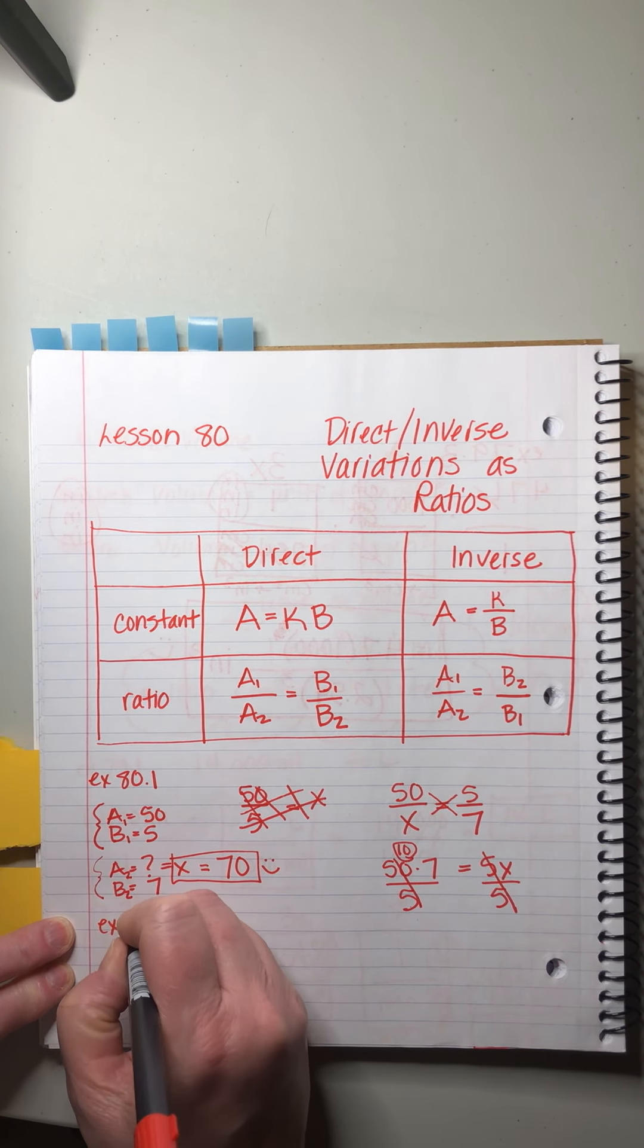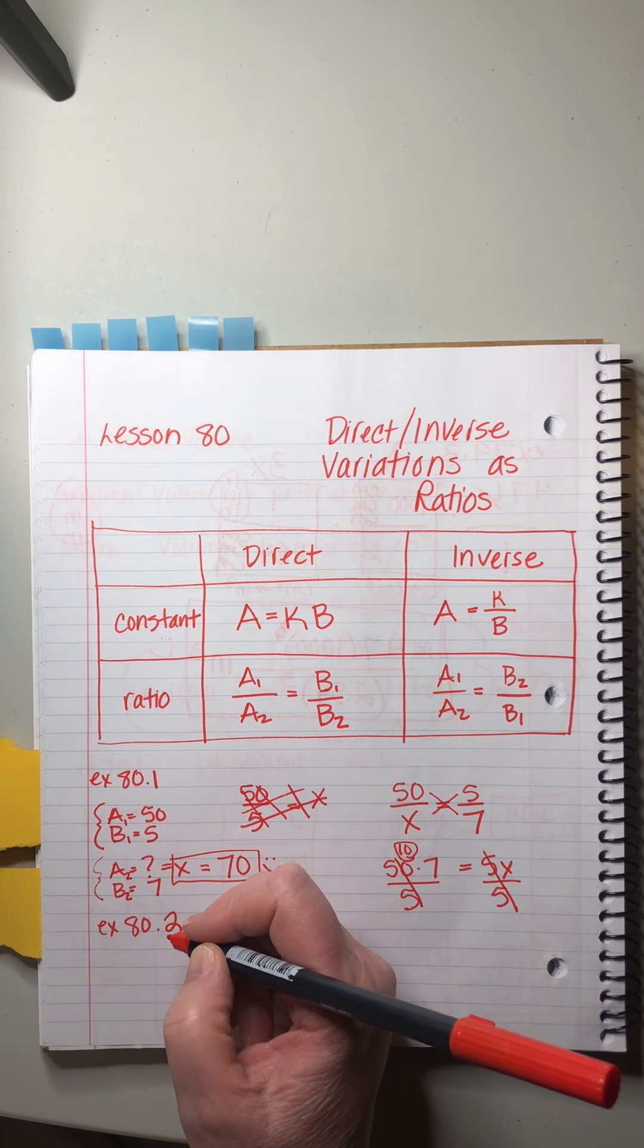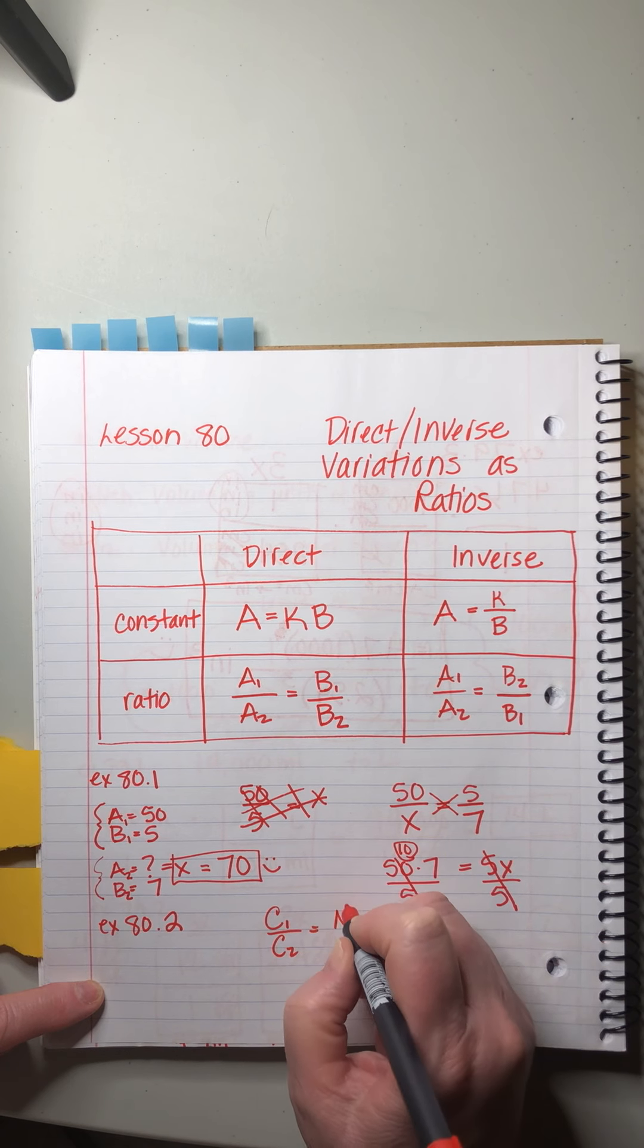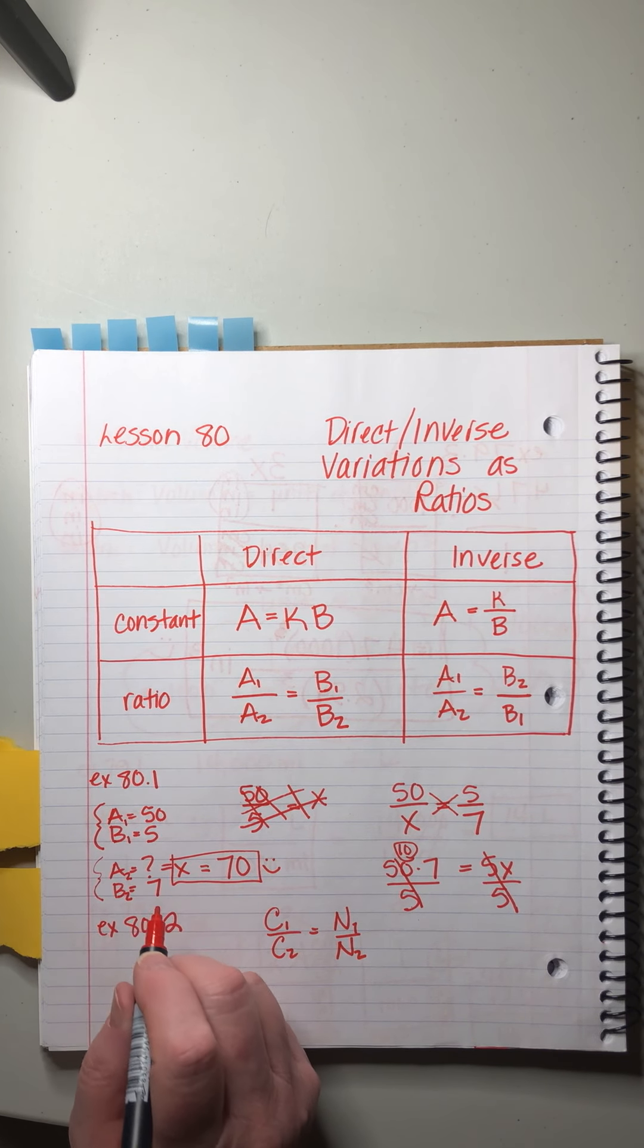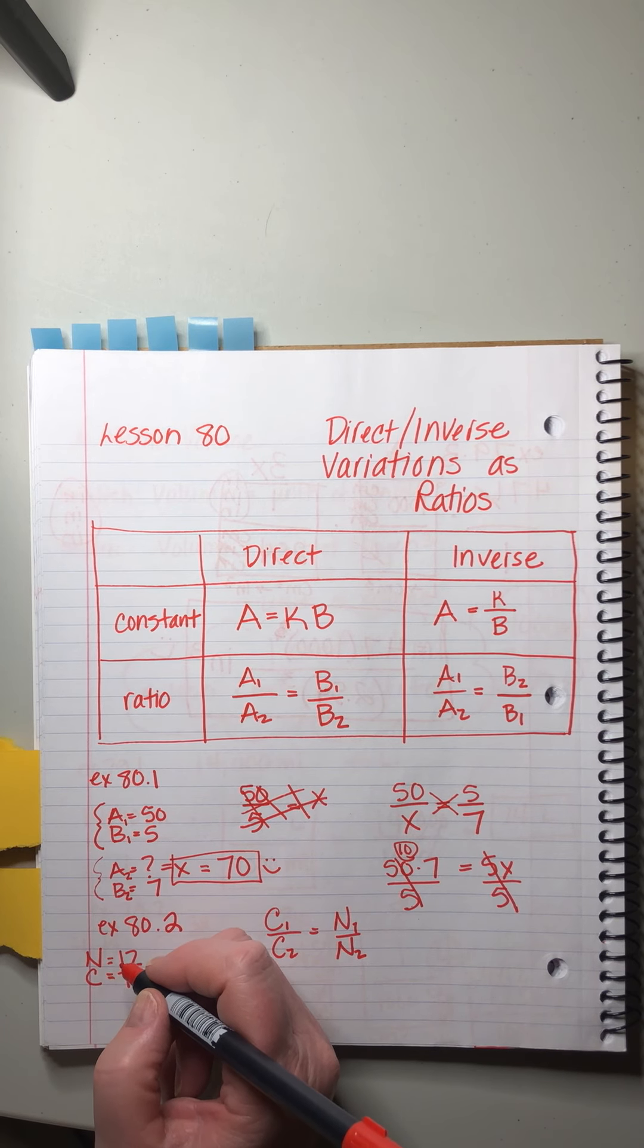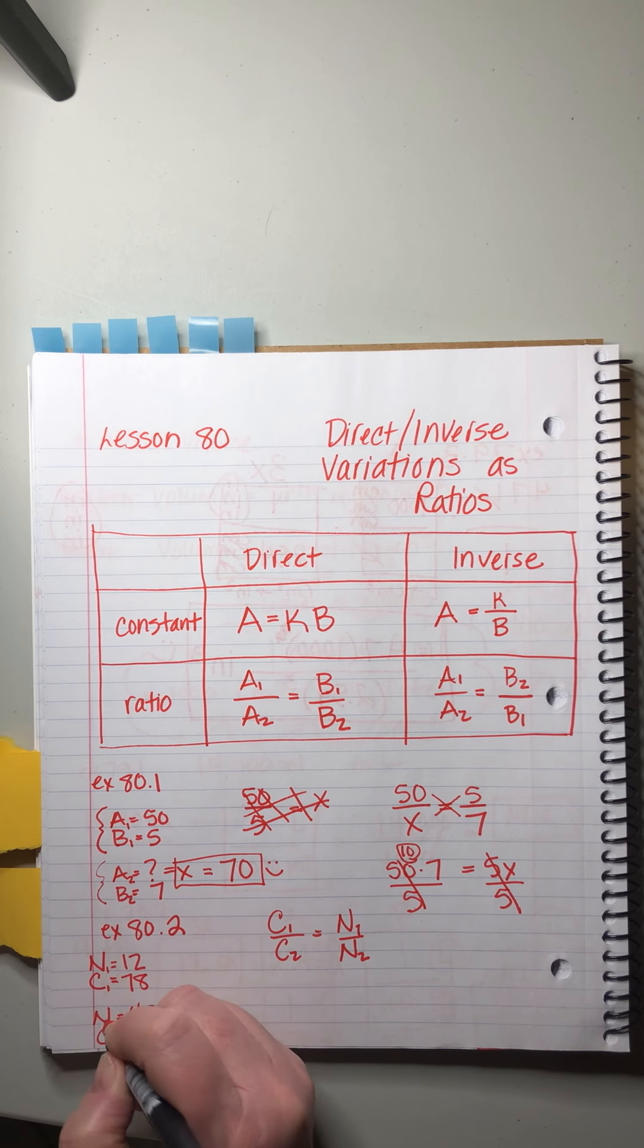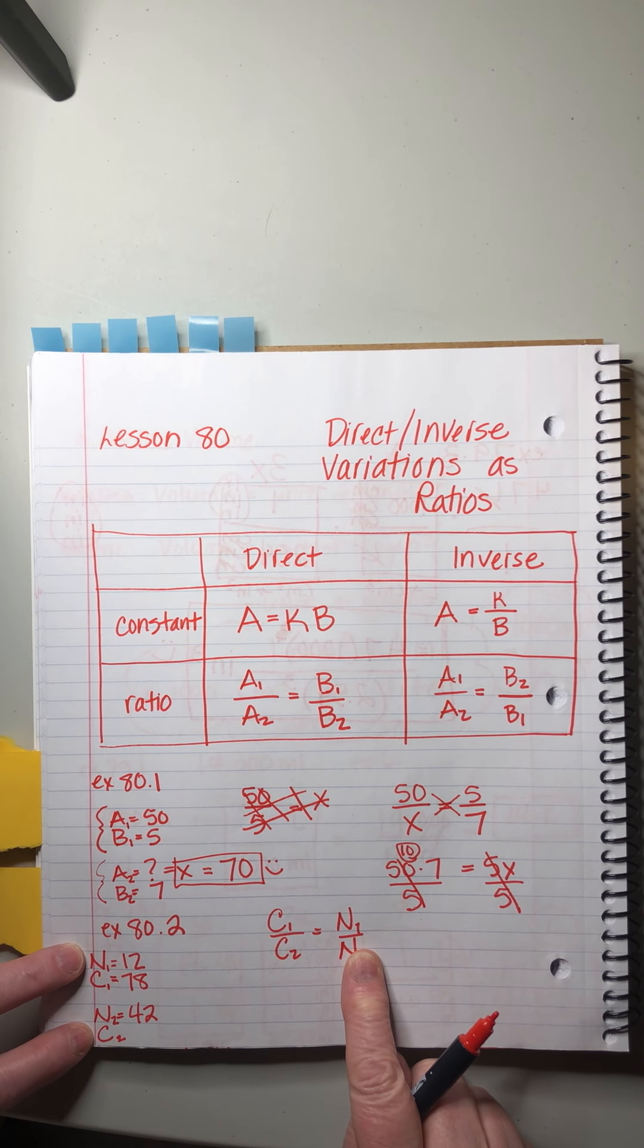Okay. So far, so good, right? Let's do another one. 80.2. Cost varies directly as the number purchased. So cost varies directly as the number purchased. I'm going to write this as C1 over C2, cost over cost, equals number over number. And then I'm going to read the information. Ready? If 12 can be purchased for $78. Okay. 12 must be the number and 78 is the cost.